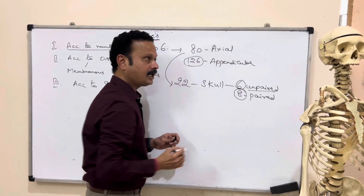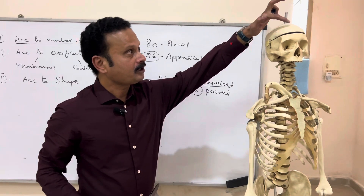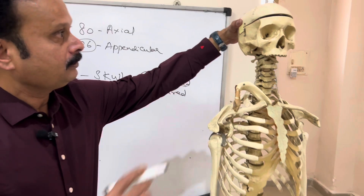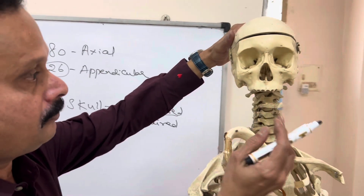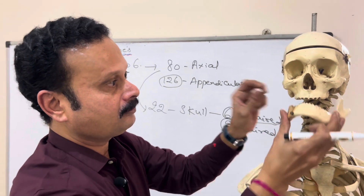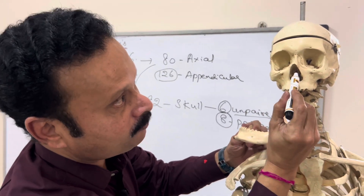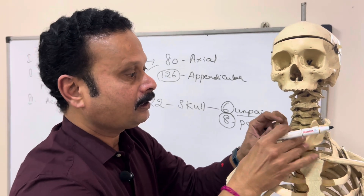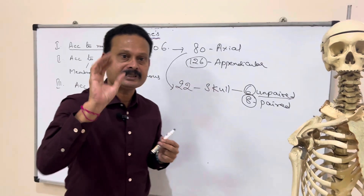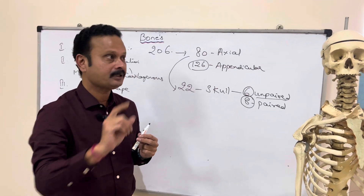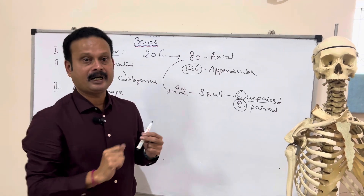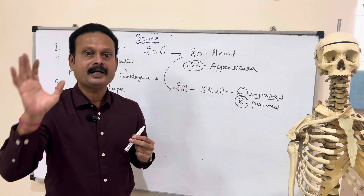The 6 unpaired bones are: frontal bone, occipital bone, mandible, vomer bone, sphenoid bone, and ethmoid bone. These 6 are the unpaired bones of the skull.